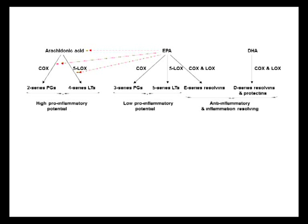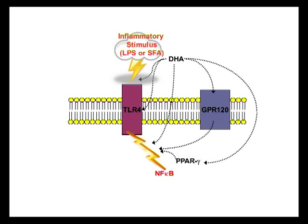The next slide indicates some other possible mechanisms of action of omega-3 fatty acids, with docosahexaenoic acid — DHA — as the representative omega-3. These mechanisms act in parallel with the change in eicosanoid and resolvin-type mediator production. Data has shown that an inflammatory stimulus, either bacterial lipopolysaccharide (LPS) or saturated fatty acids, acts through toll-like receptor 4 to initiate inflammatory signaling through the NF-κB pathway.